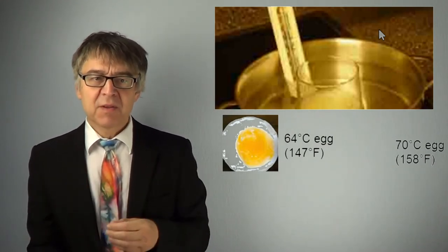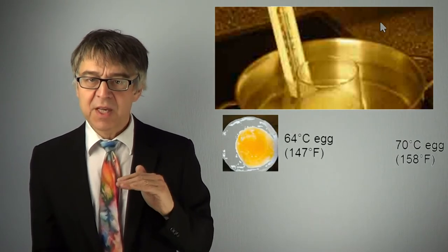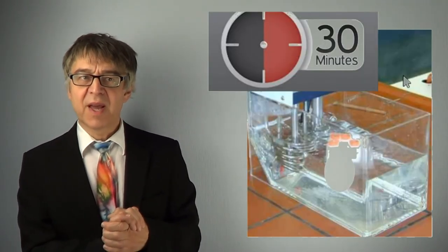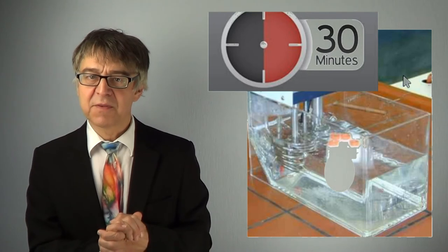Bring a water bath to the desired temperature and keep it constant. You can do this manually with a thermometer or use an automatic thermostatic device like this one. Put in the egg or the desired number of eggs and keep the temperature as constant as possible. It takes about 30 minutes until the egg has reached the temperature of 64 degrees Celsius.